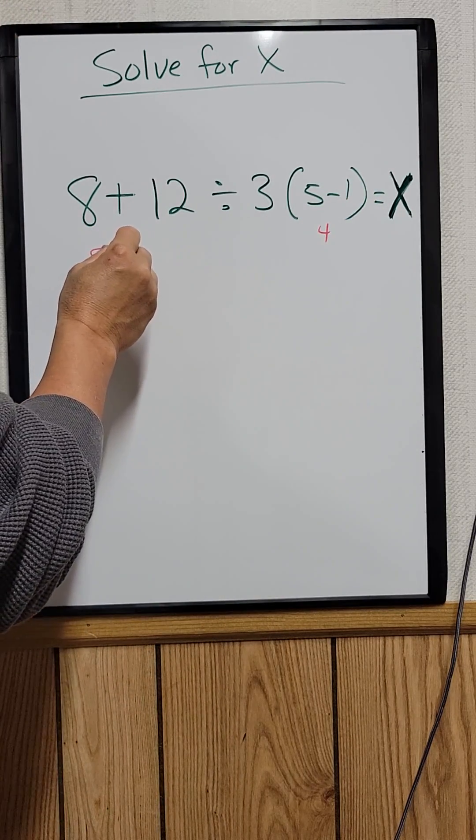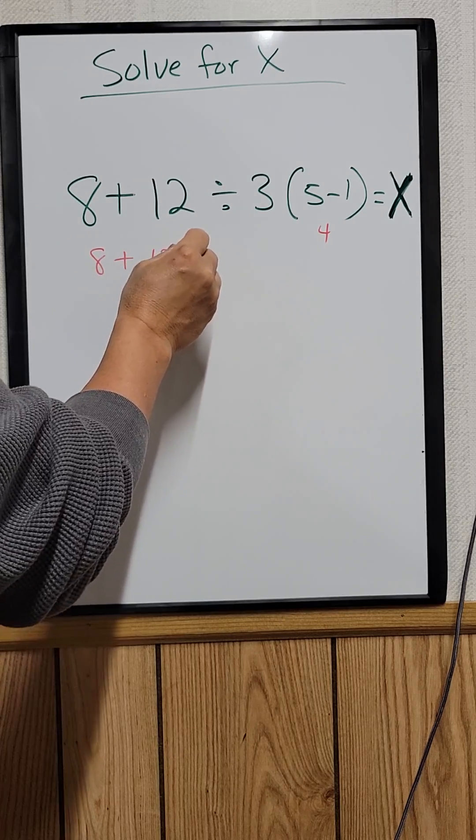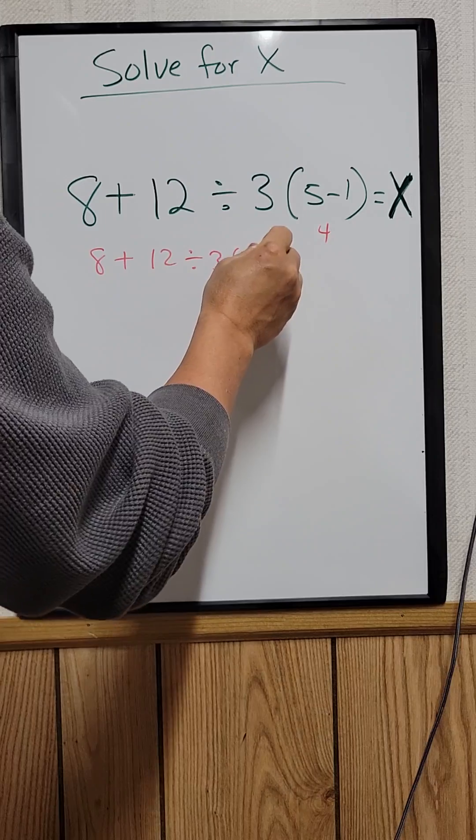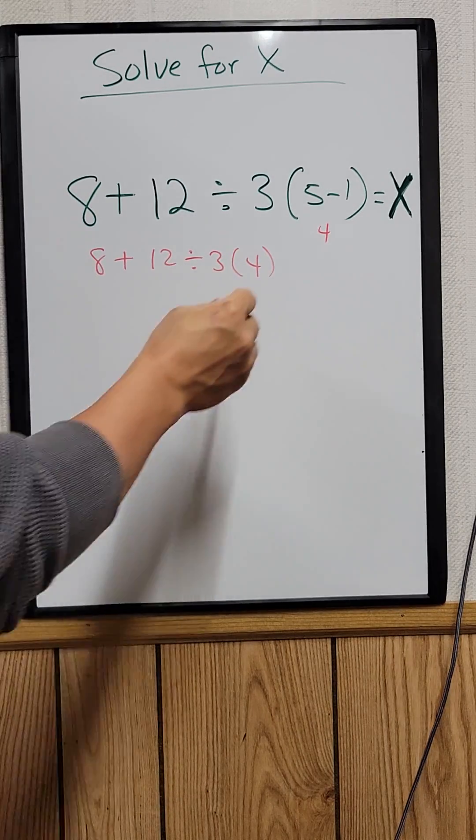So rewrite this. 8 plus 12 divided by 3 times 4, equal to x.